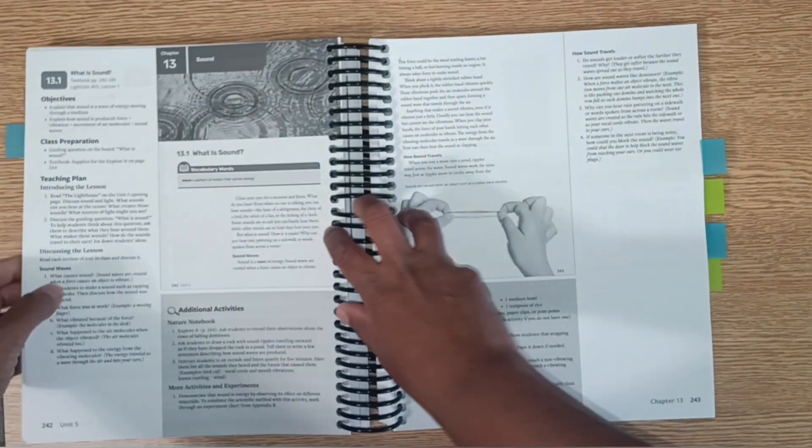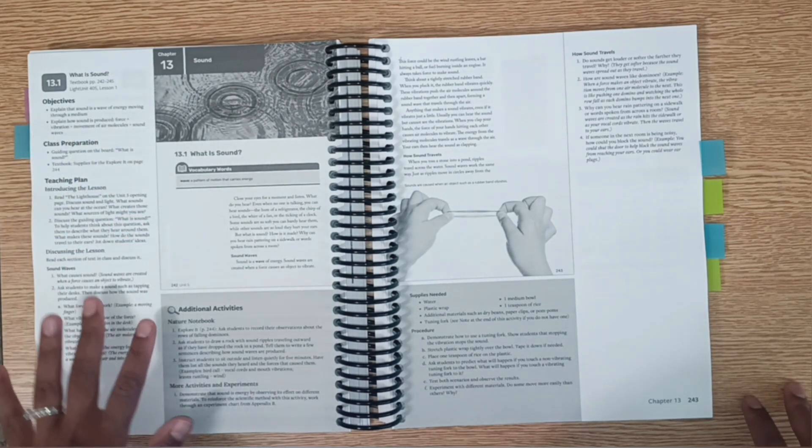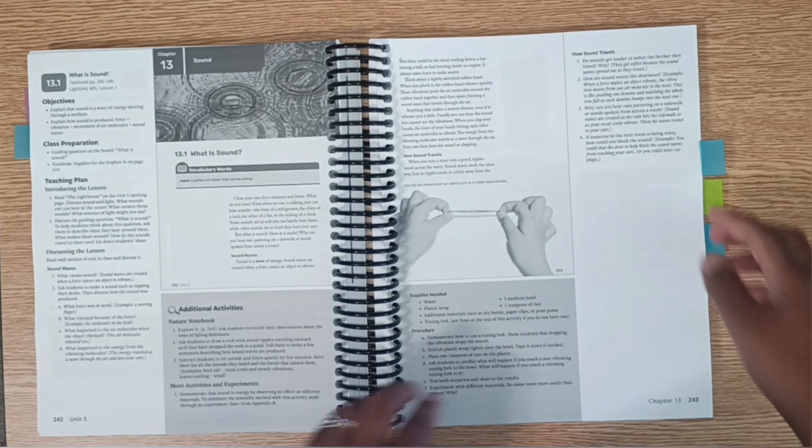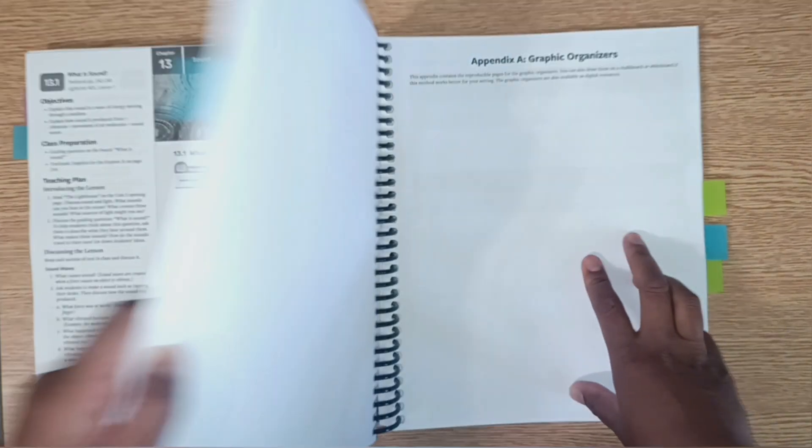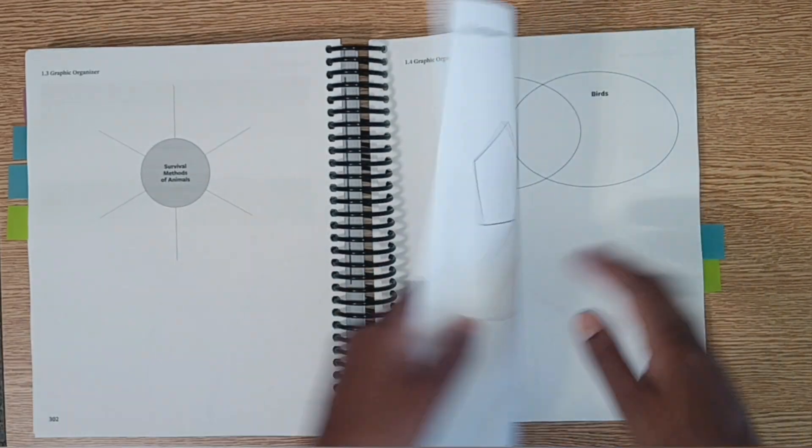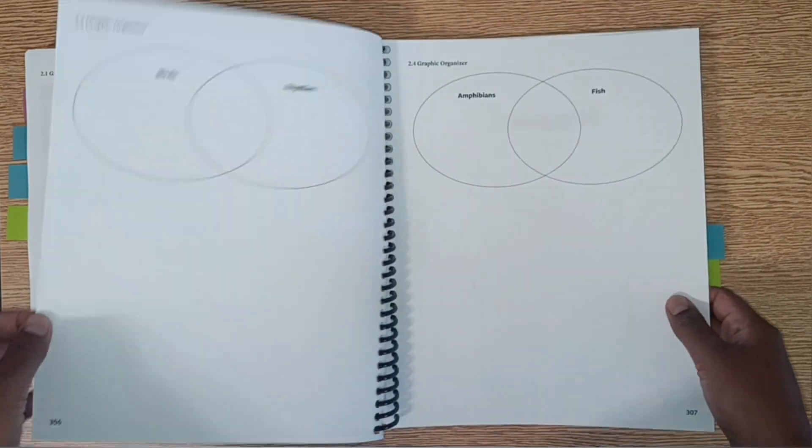Here we have the additional activities, the nature notebook activities, experiments. It'll say here that the child can work through the experiment chart from the appendix. I'll show you what's in the appendix. The appendix has an extensive supply of graphic organizers and charts that could be used in the lessons.